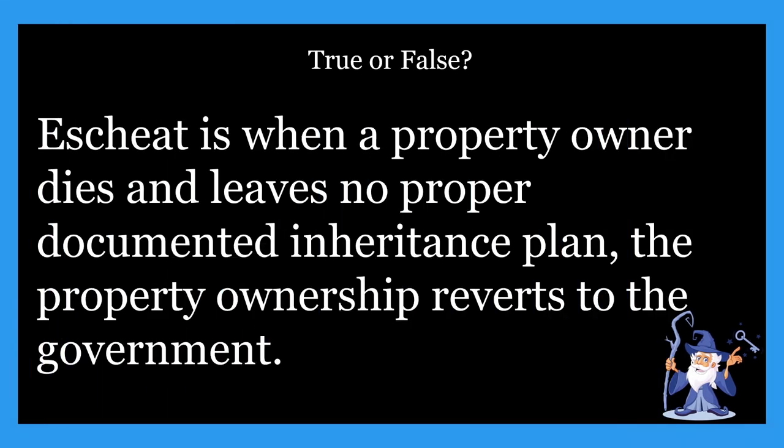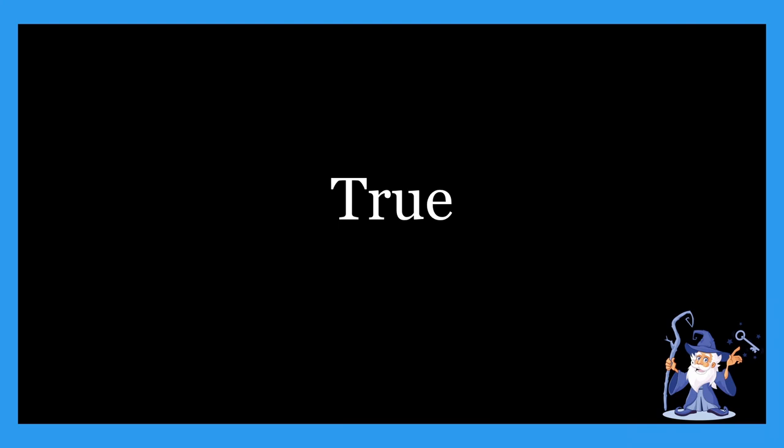Next one: escheat is when a property owner dies and leaves no proper documented inheritance plan, and the property ownership then reverts to the government. Is that true or false? That one's going to be true. Escheat is when a property owner dies and leaves no proper documented inheritance plan and the property ownership reverts to the government. Escheat basically just ensures that property always has ownership.